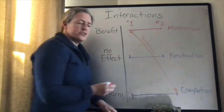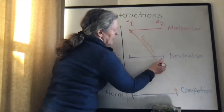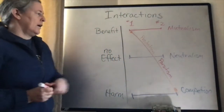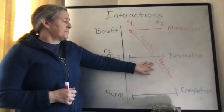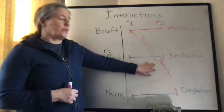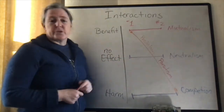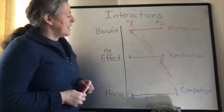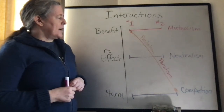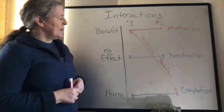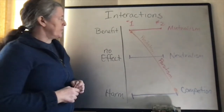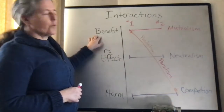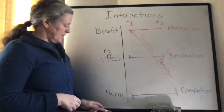We also have parasitism. This is usually the case when one organism is much smaller than the other, and it takes resources from the larger organism without actually killing it. An example of a parasite would be a tick — it sucks blood and doesn't usually kill the host organism, so it can get resources from it for a long time. In the case of both predation and parasitism, only one organism benefits and the other one is harmed.